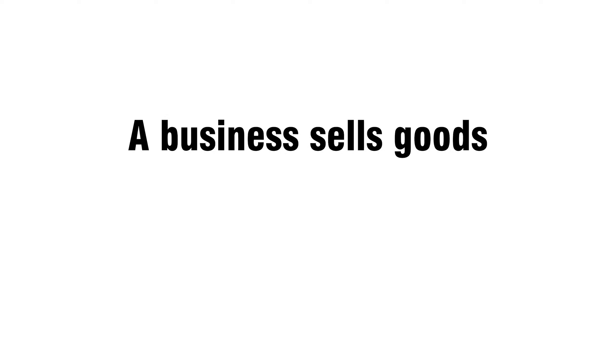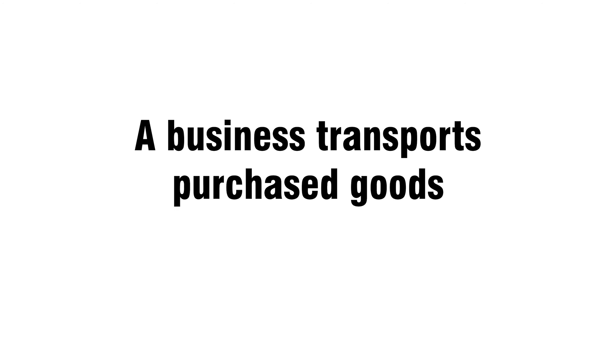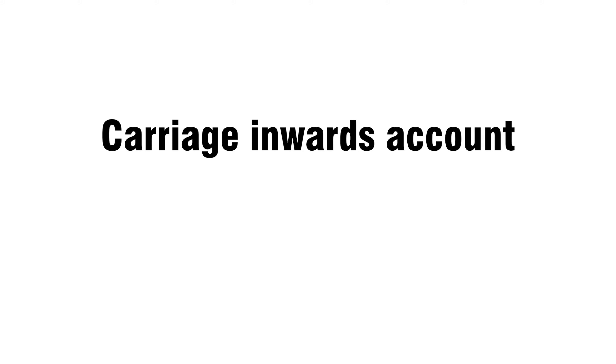Activity seven: a business sells goods. Sales account. Activity eight: a business transports purchased goods. Carriage inwards account.